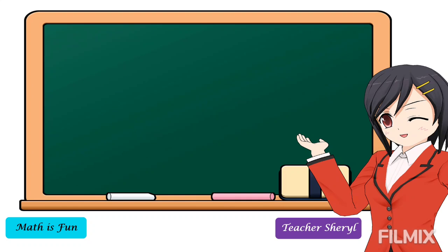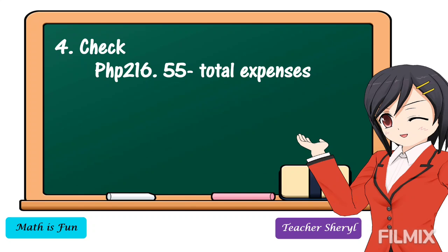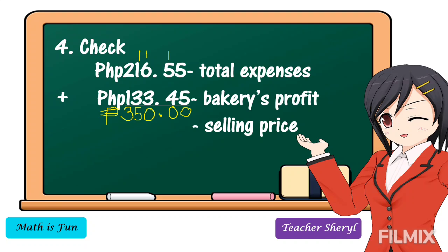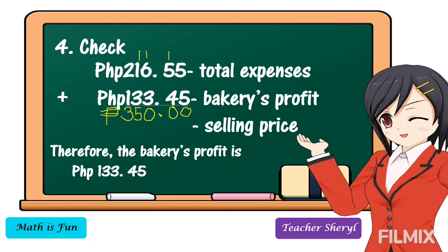To know if our answer is correct, we check by adding the total expenses and the bakery's profit. 5 plus 5 is 10 — write 0, regroup 1. 1 plus 5 plus 4 is 10 — write 0, regroup 1. 1 plus 1 plus 3 is 5. 2 plus 1 is 3. Copy the decimal point and write the peso sign. The result is 350 pesos, which is the selling price. Therefore, the bakery's profit is 133 pesos and 45 centavos.